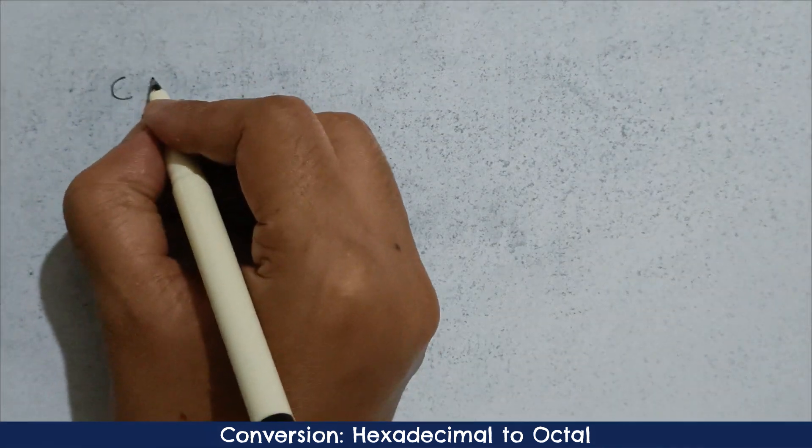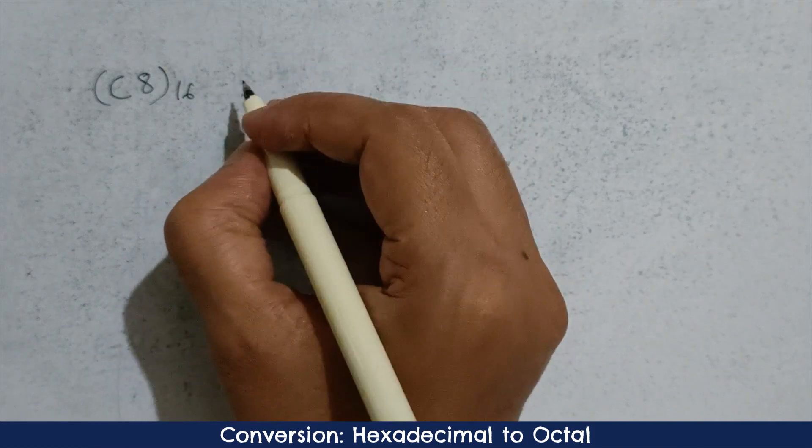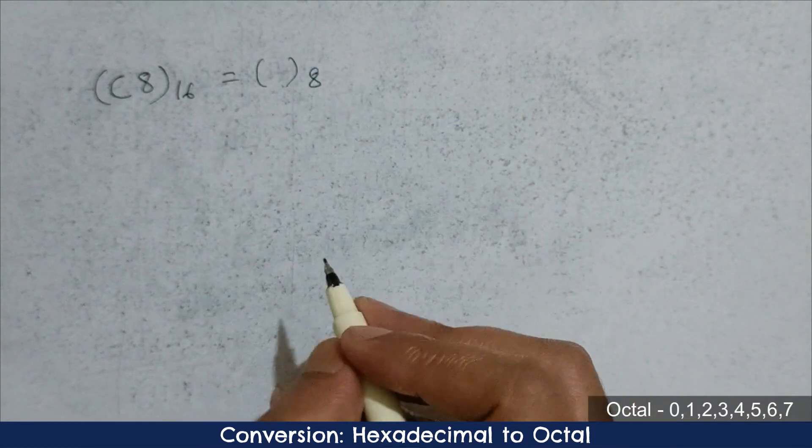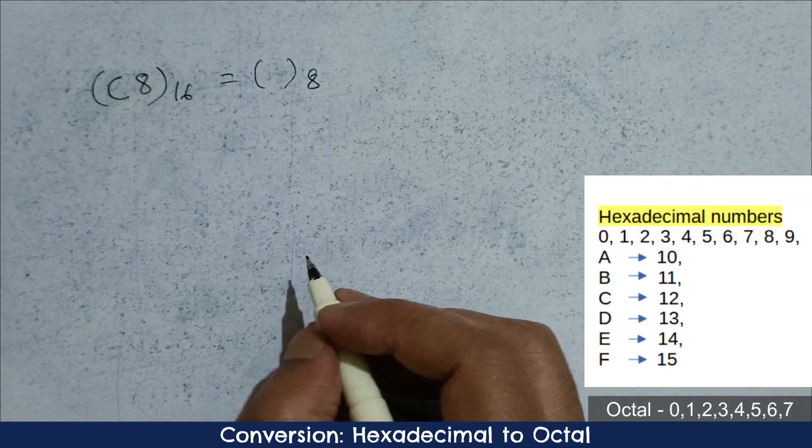Hi friends, in this tutorial I will show you how to convert hexadecimal number to octal. You already know a number is represented in octal using digits 0 to 7, while hexadecimal can be represented using digits 0 to 9 and A to F.